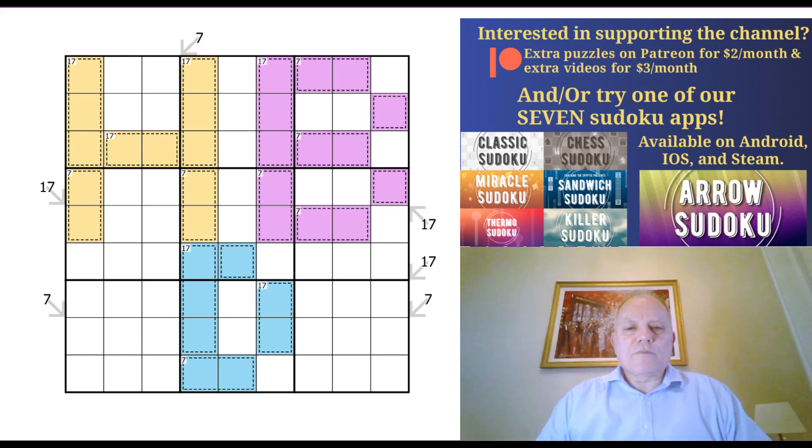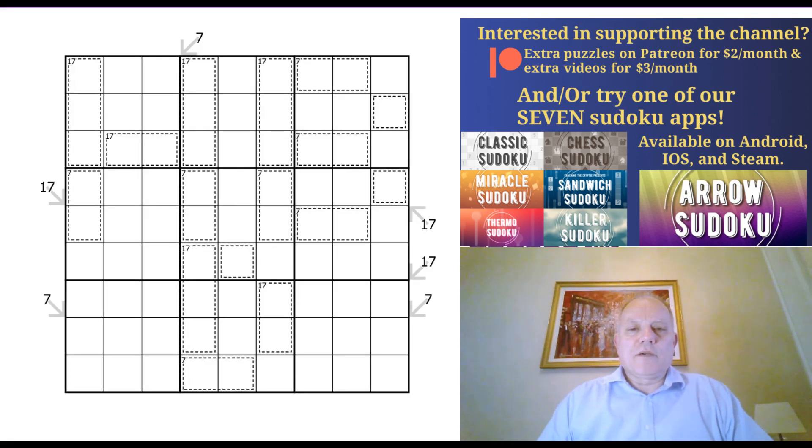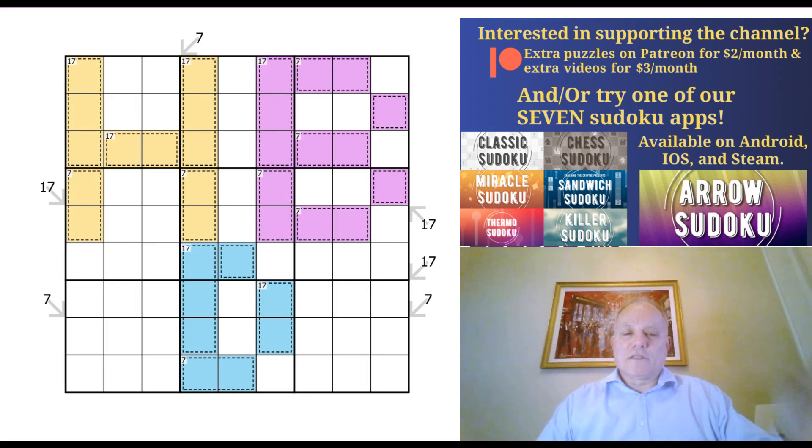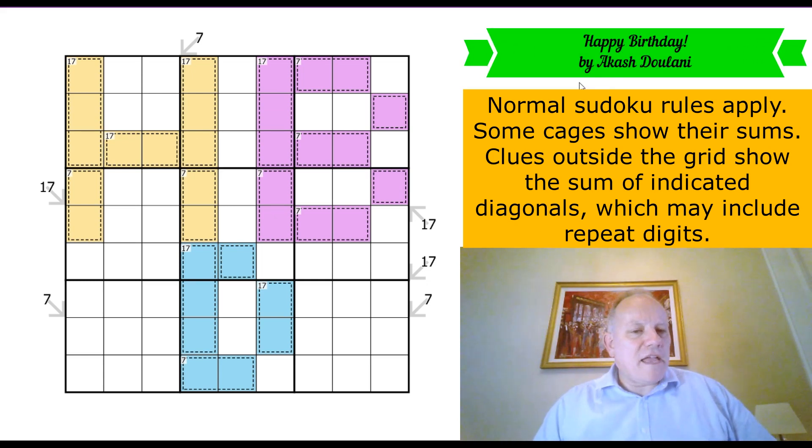Now, as to this puzzle, do be aware that you can play it without colors. You can go to hide colors in the settings using the cogwheel and switch them on or off. But I am probably going to do it with the colors, because the colors spell out HBD, which I believe is either Happy Birthday or Happy Birthday D, which could be either Akesh's wife's first name or Mrs. Doulani.